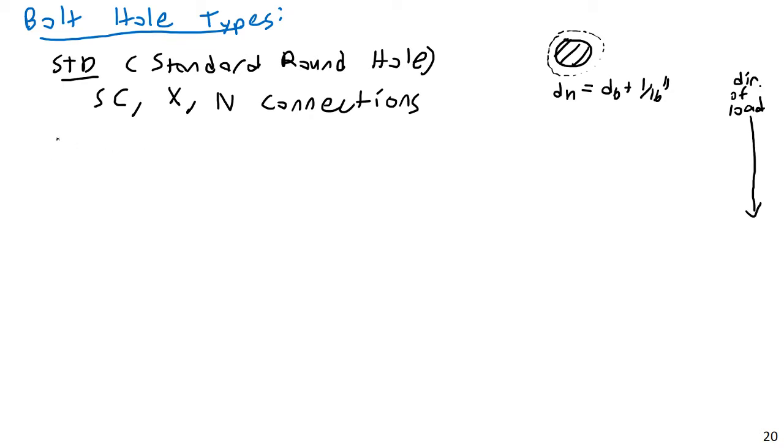Then we have OVS, which are oversized holes. OVS, oversized round holes. This is where you have, just as it describes, it's right in the box. It's an oversized hole. So you're going to have a diameter much larger than just dB plus 1/16th. You'd have an eighth, a quarter, something like that. And this is allowed only for SC, for slip critical connections only.